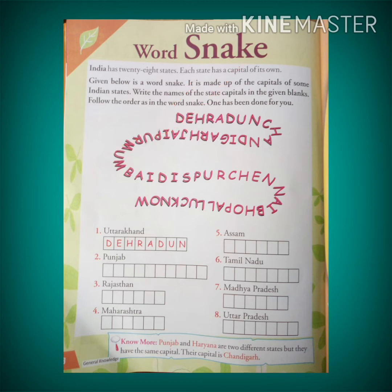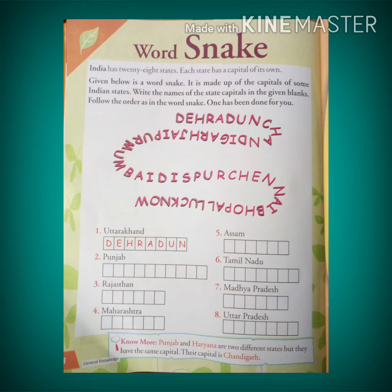Below the word snake, some blank boxes are given. We have to write the names of the state capitals in the given blanks. The first one is Uttarakhand — the capital of Uttarakhand is Dehradun.